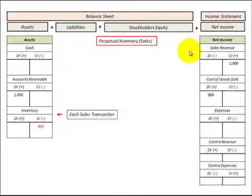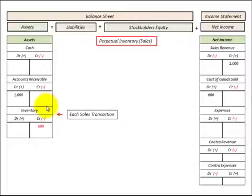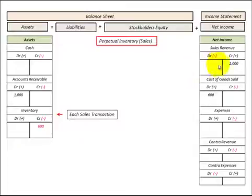Here we're going to look at sales revenue on the income statement in detail, but before we get into that, we have to make a distinction on how we charge our inventory against that sale. We make a sale on account — accounts receivable — and we increase that by, say, $1,000, and then we would credit or increase sales revenue by $1,000.